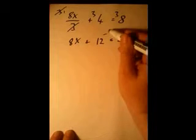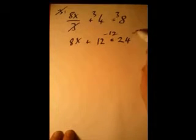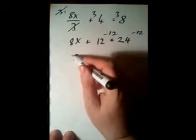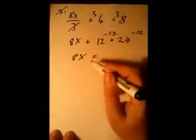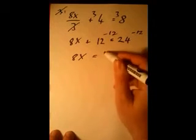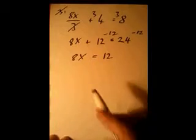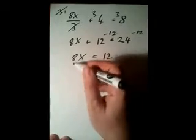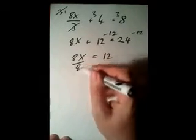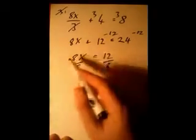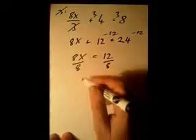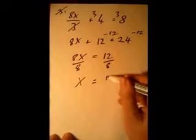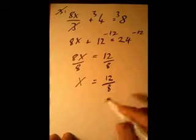To finish off, we get rid of this 12 by subtracting 12 from both sides. That leaves 8x on the left — since those two cancel out — and 24 minus 12 is 12 on the right. Now we need X on its own, so we divide by 8 on both sides. 8 divided by 8 is 1, leaving X equals 12 over 8.